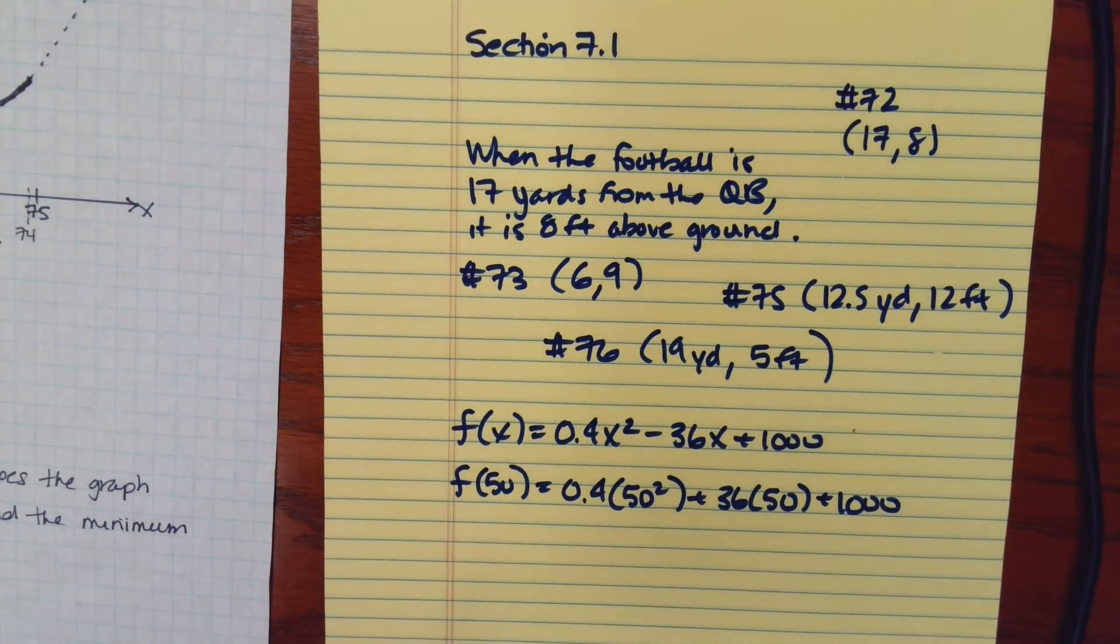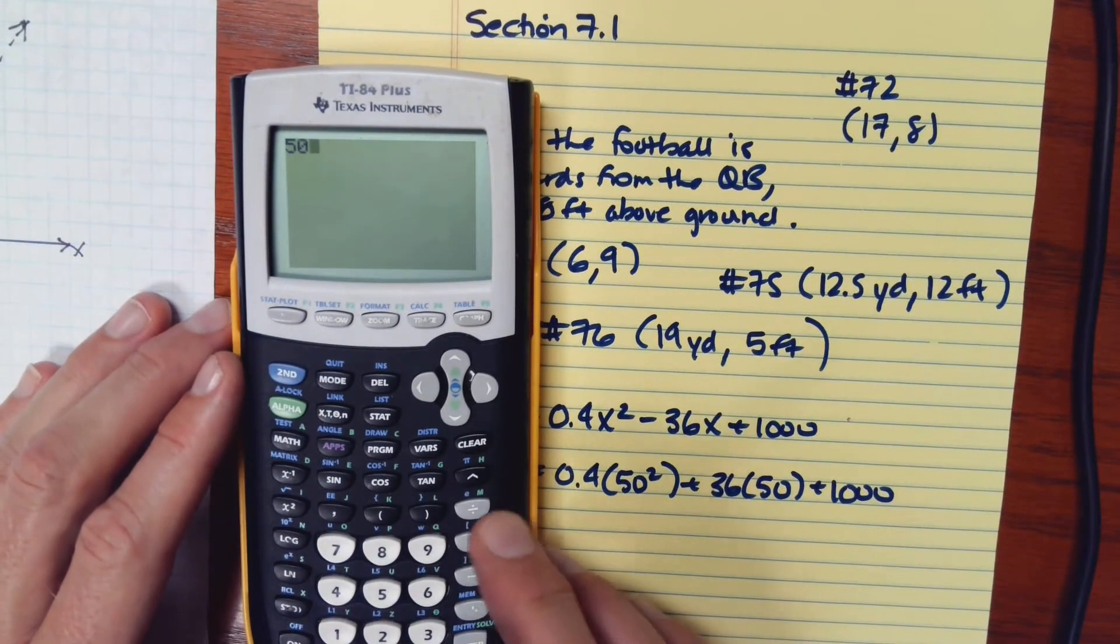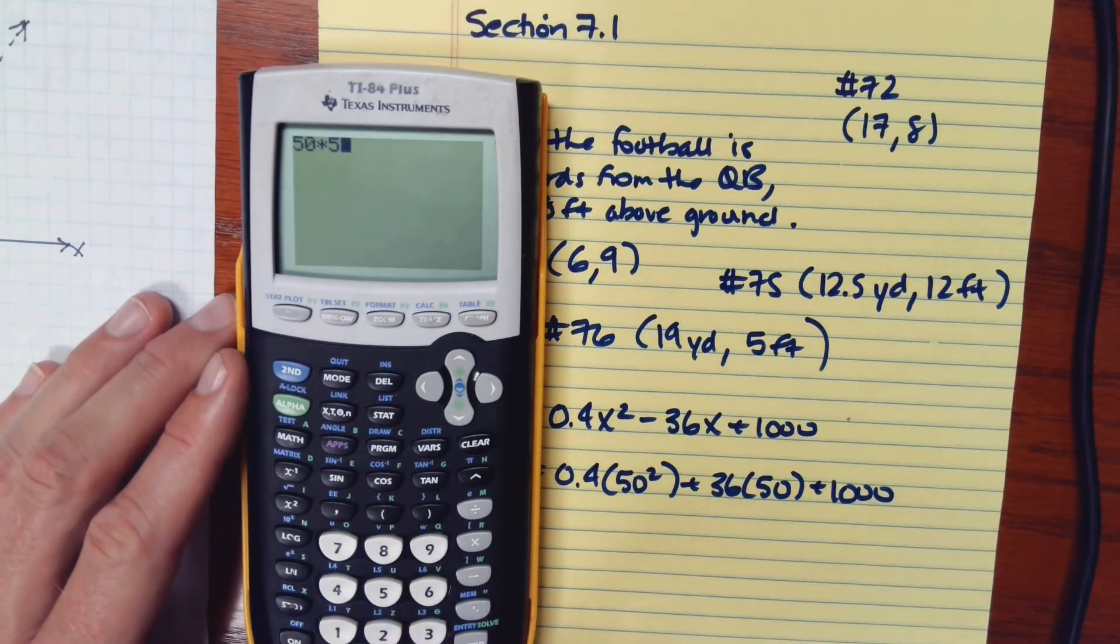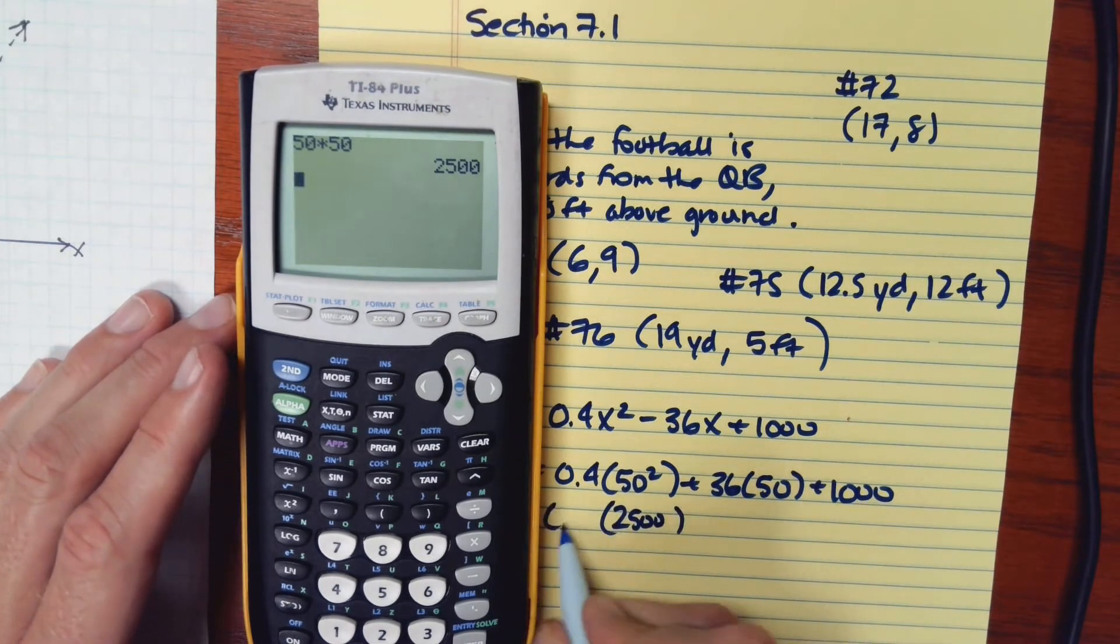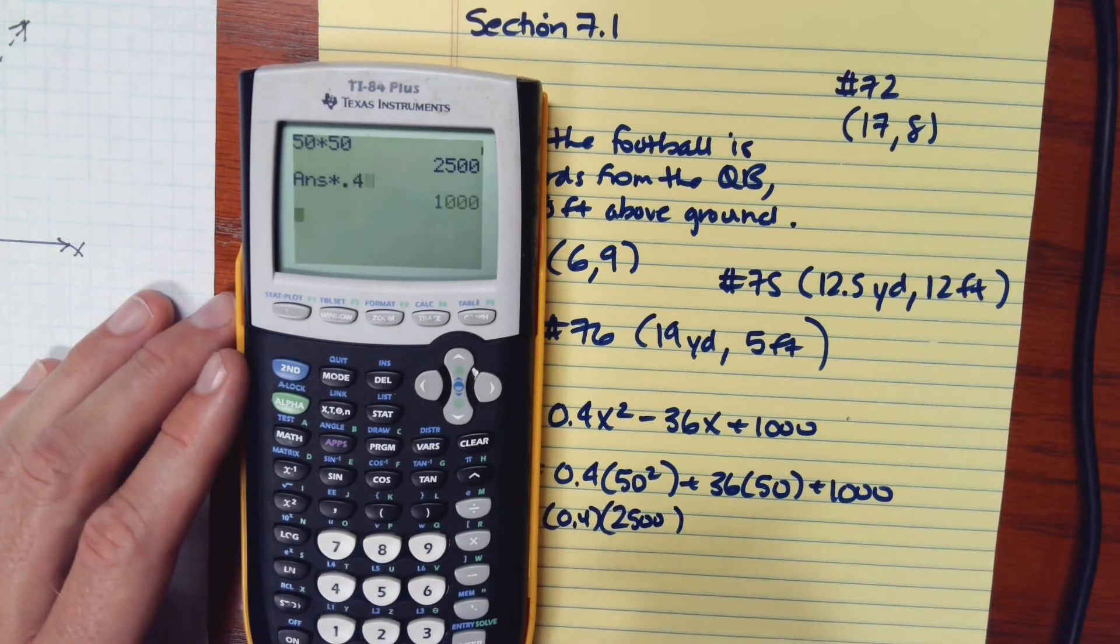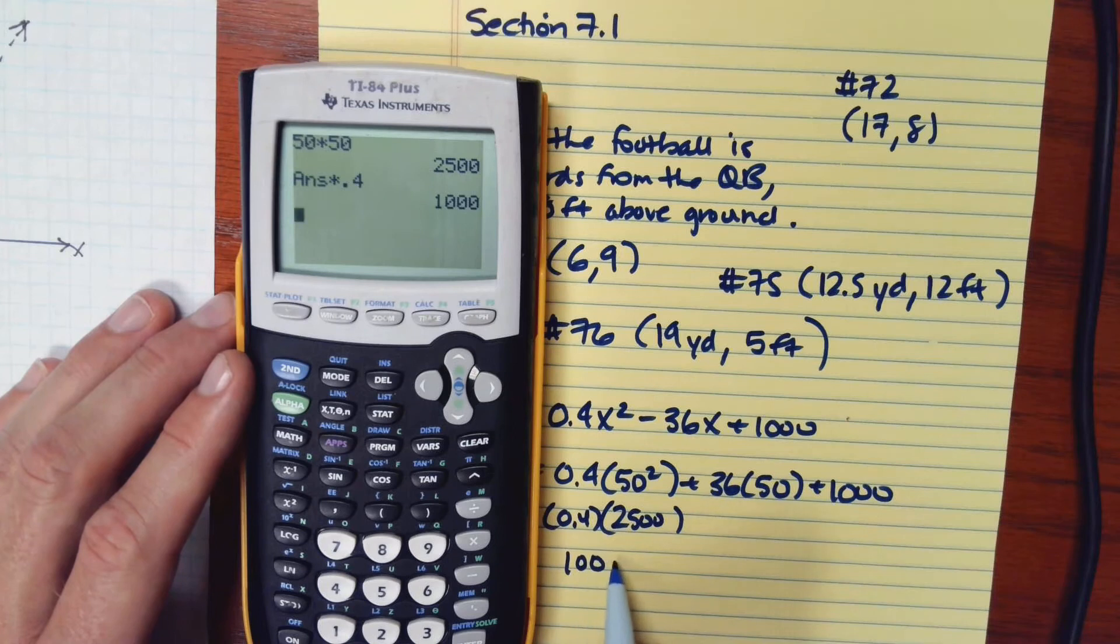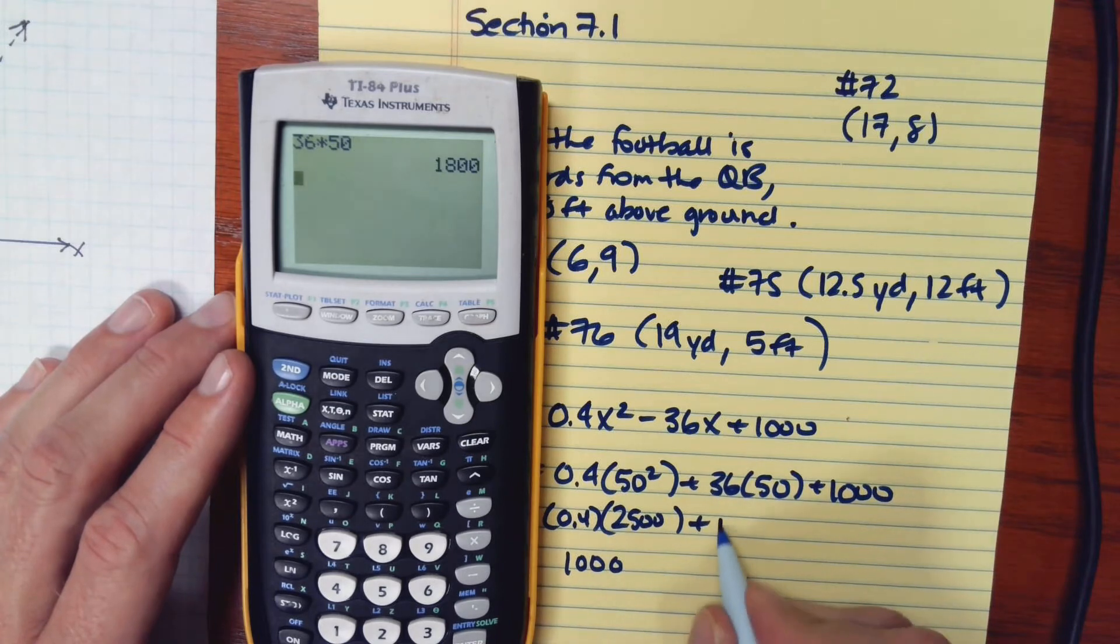So let's see. If I square 50. 50 times 50. That's 2,500. And I'll multiply that by 0.4. And that equals 1,000. Let's see. 36 times 50. That's 1,800.